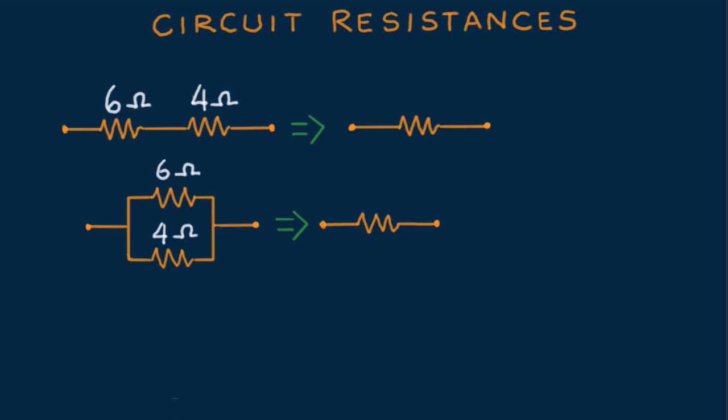So we see the equivalent resistance of resistors in series is simply their sum, 10 ohms.